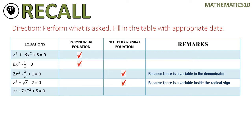For number five, it is not a polynomial equation as well. Going back to the definition of polynomials, there is a negative exponent: x raised to the fourth power minus 7x raised to negative 2 plus 5 equals zero. The second term has the variable raised to negative 2, so that is why it is not a polynomial equation.